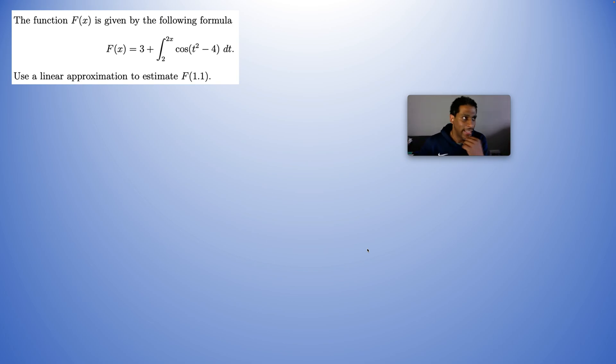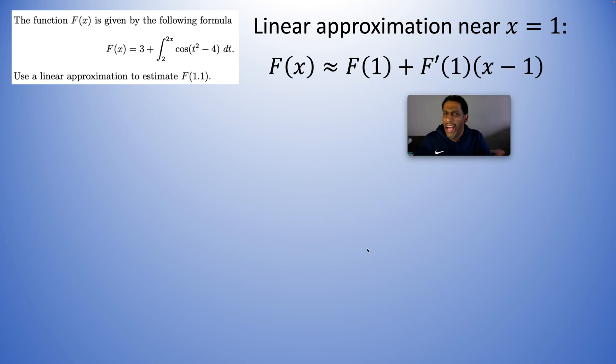All right. So got to go back and remember, what does it look like to create a tangent line? And this formula comes from the fact that we're using point slope.